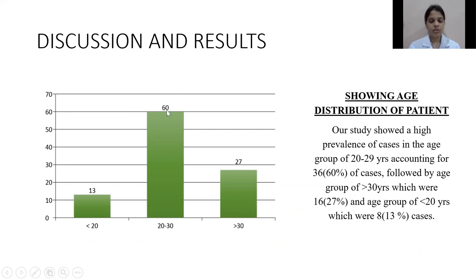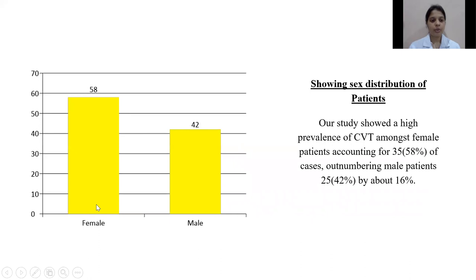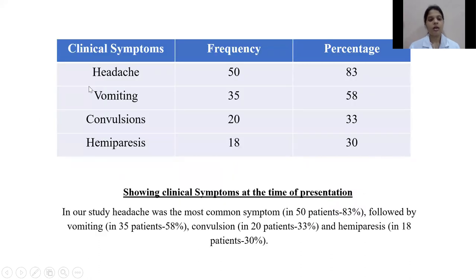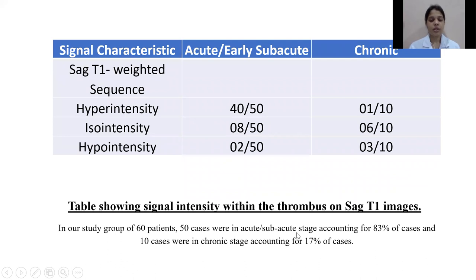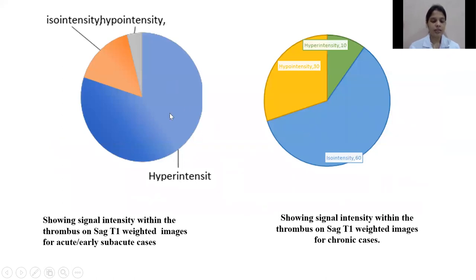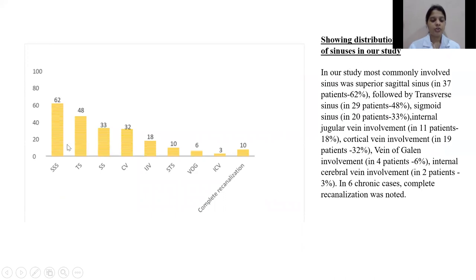In our study, the majority of patients were in the age group of 20 to 30 years — almost 60 percent — followed by those more than 30 years at 27 percent. Majority were female, constituting approximately 58 percent. The most common symptom was headache at approximately 83 percent, followed by vomiting, convulsions, and hemiparesis. Of 60 patients, 50 cases were in the acute or subacute stage accounting for 83 percent, and 10 cases were in the chronic stage at 17 percent. In acute/subacute cases, most were hyperintense on sagittal T1-weighted sequences; in chronic cases, most were isointense. The most commonly involved sinus was the superior sagittal sinus, followed by the transverse sinus and sigmoid sinus.